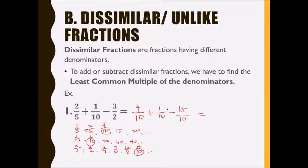Now add and subtract. You will have four plus one minus fifteen. Copy the denominator. Four plus one is five, and minus fifteen is negative ten. So negative ten over ten is simply negative one.